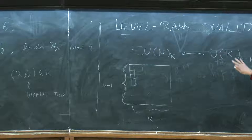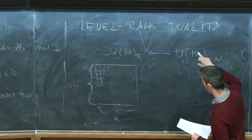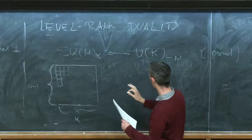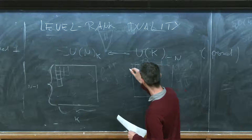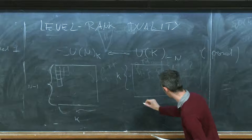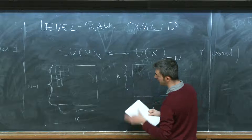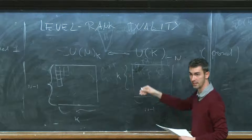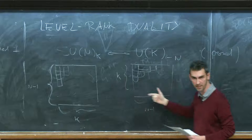So the map of the lines is that you take this Young diagram and flip it along the diagonal, and then it fits in here. It's the same rectangle, but flipped along the diagonal.